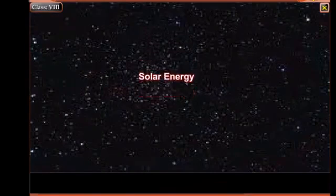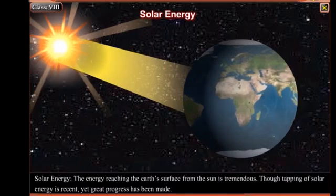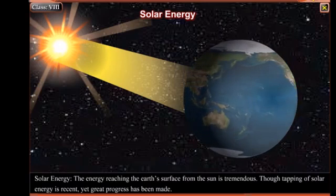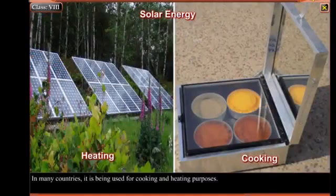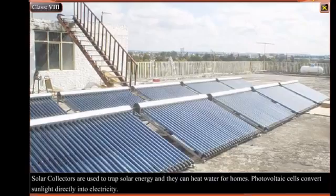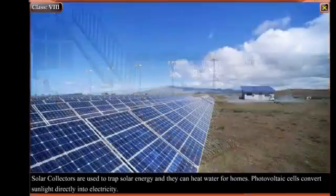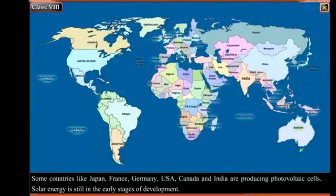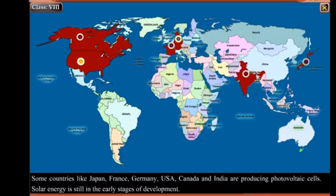Solar Energy: The energy reaching the earth's surface from the sun is tremendous. Though tapping of solar energy is recent, great progress has been made. In many countries, it is being used for cooking and heating purposes. Solar collectors are used to trap solar energy and can heat water for homes. Photovoltaic cells convert sunlight directly into electricity. Countries like Japan, France, Germany, USA, Canada, and India are producing photovoltaic cells. Solar energy is still in the early stages of development.